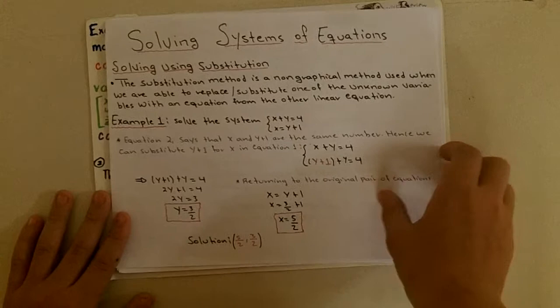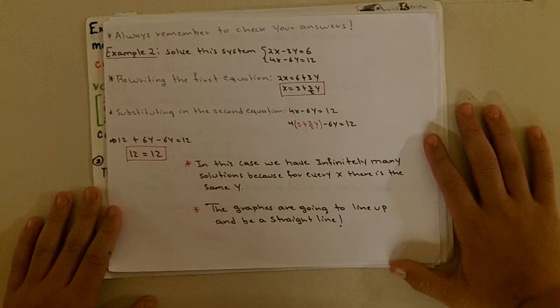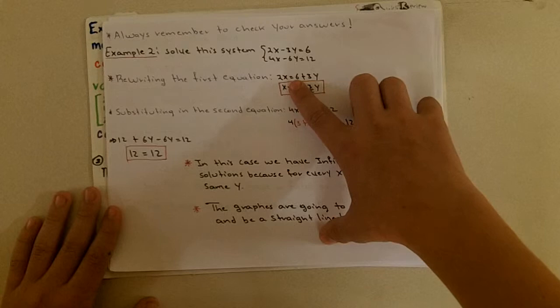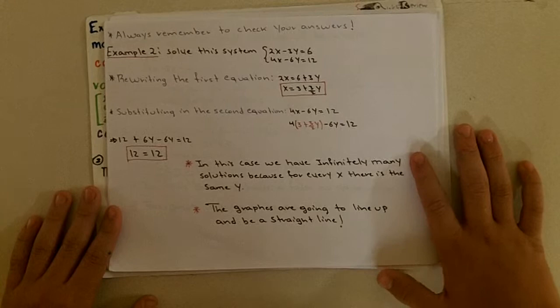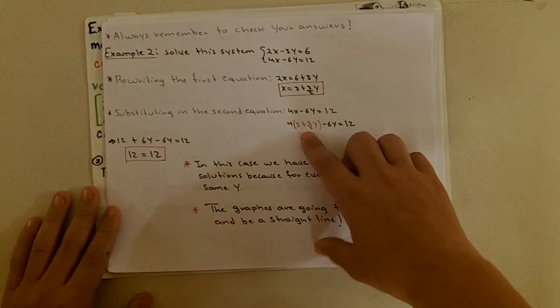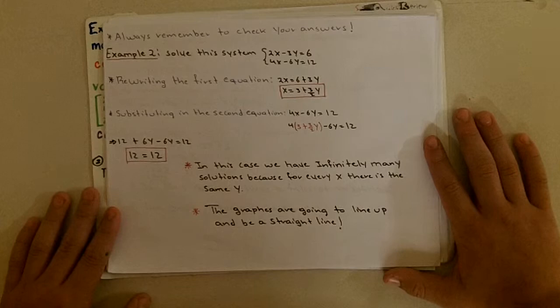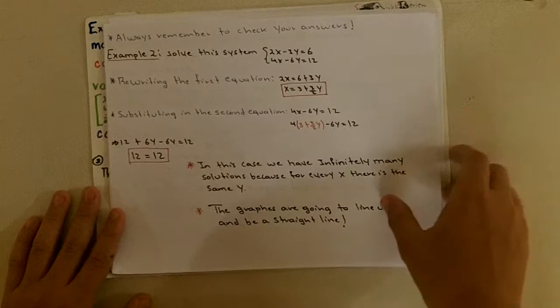Always remember to check your answers. Example 2: 2x minus 3y equals 6 and 4x minus 6y equals 12. Rewriting the first equation, you get x equals 3 plus 3/2 y. Substituting into the second equation gives 12 plus 6y minus 6y equals 12, which means 12 equals 12. In this case there are infinitely many solutions, because the graphs line up — they are consistent dependent, also described as the same line.